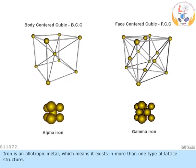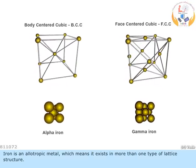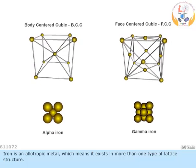Iron is an allotropic metal, which means it exists in more than one type of lattice structure.